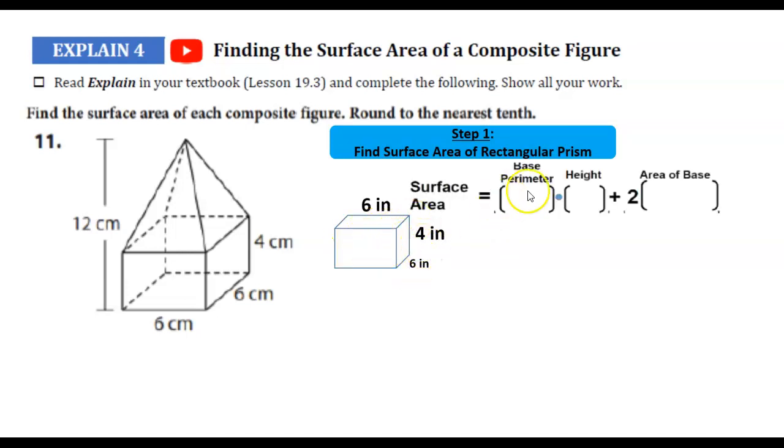Surface area for a box, remember, is base perimeter times height plus 2 times area of our base. So let's find our base perimeter. Go ahead and add that up. You got 24. Height is about 4 inches.